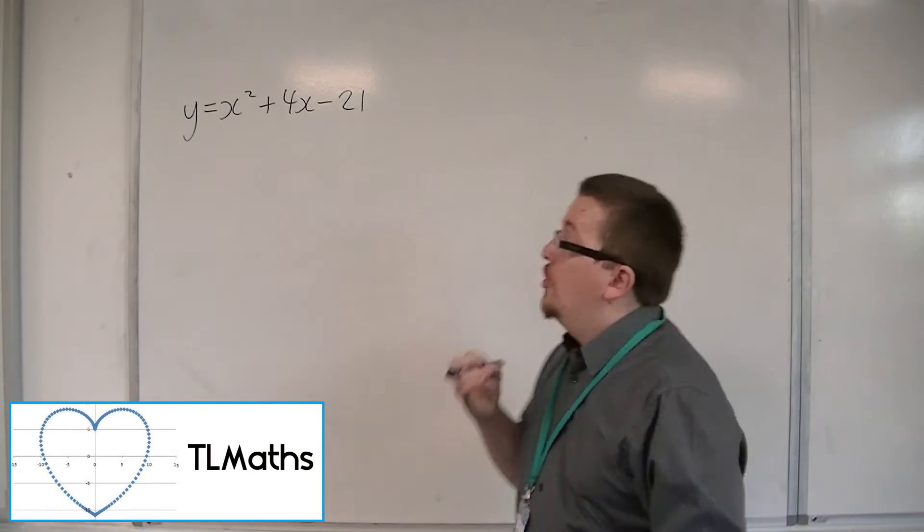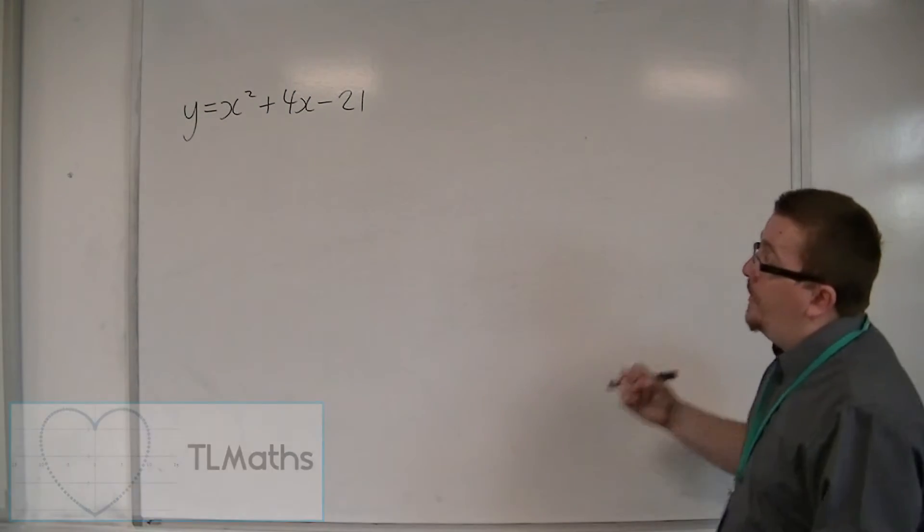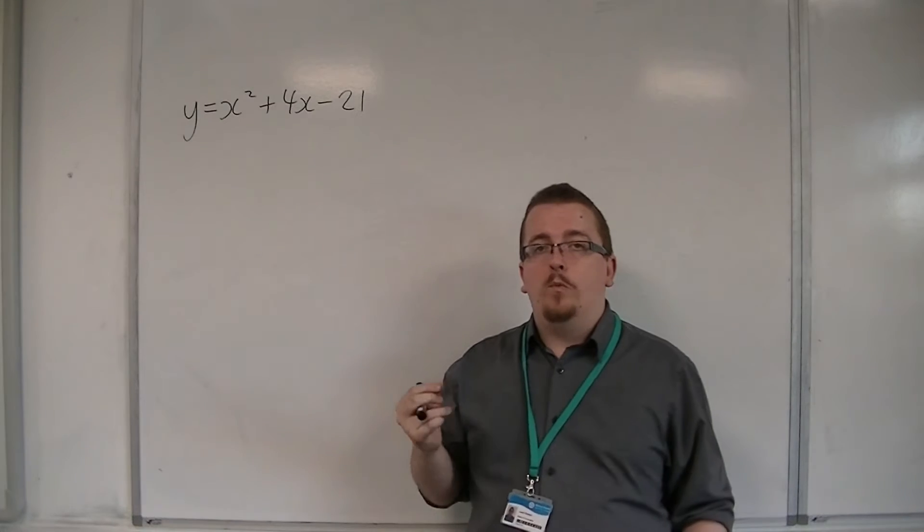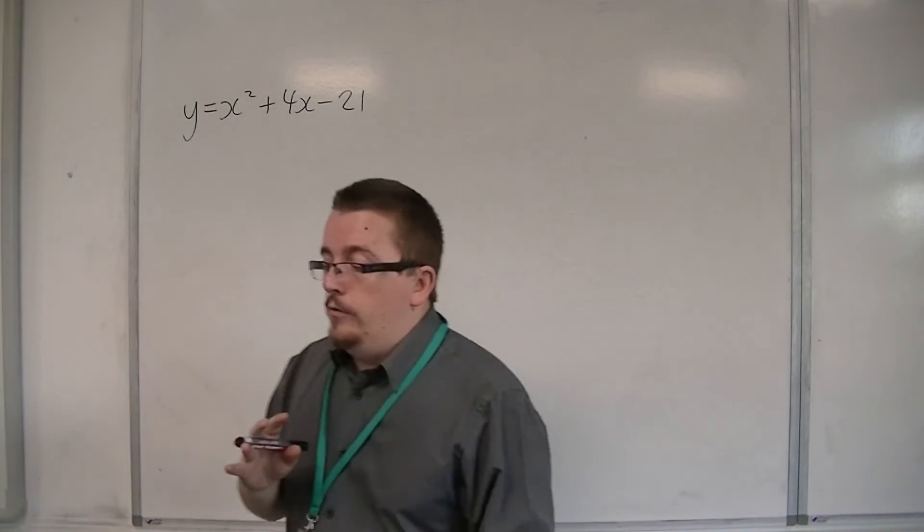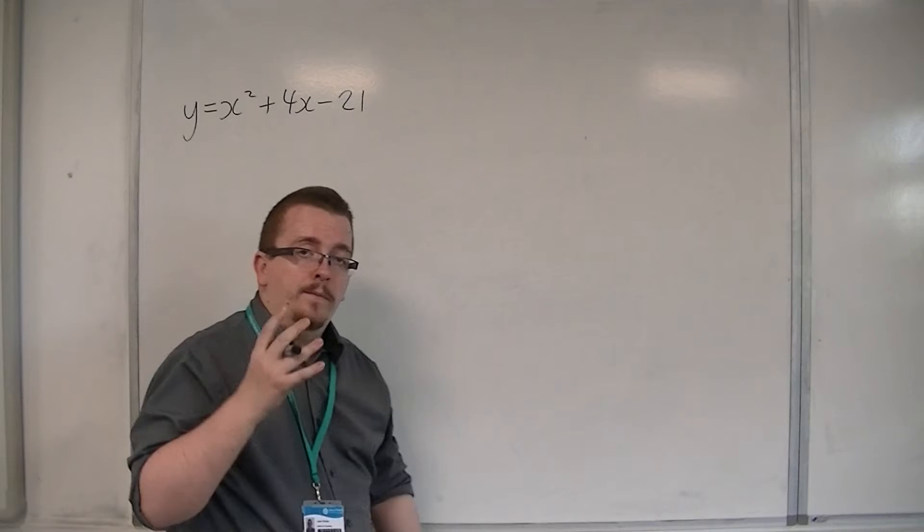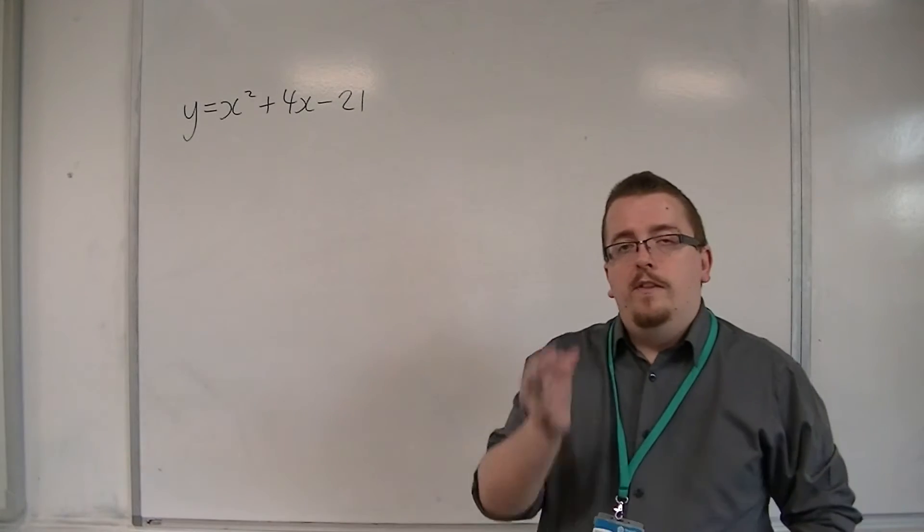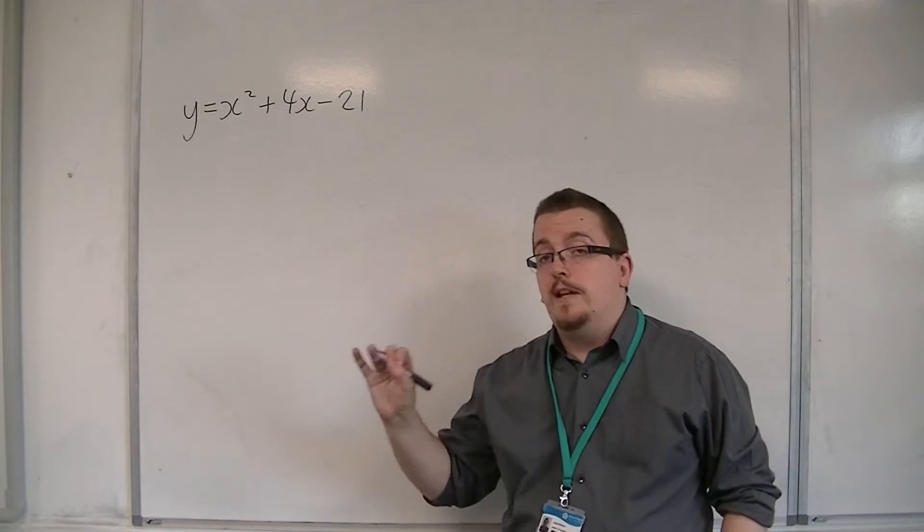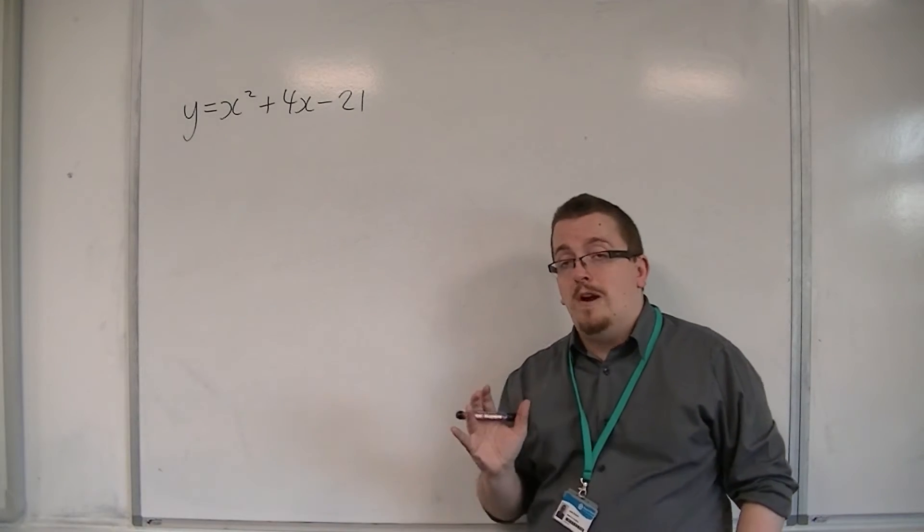Let's say we want to sketch y equals x squared plus 4x minus 21. We know that because this has an x squared in it, and that's the largest power, that it's going to be parabolic in shape. So it's going to be a parabola.